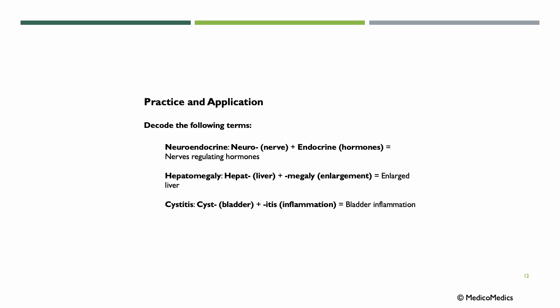Now, to some practice and application — decode the following terms. Neuroendocrine: 'neuro' meant nerve, 'endocrine' means hormones, so neuroendocrine means nerves regulating hormones. Hepatomegaly: 'hepat' came from liver, 'megaly' means enlargement, so an enlarged liver. Cystitis: 'cyst' was bladder, '-itis' was inflammation, so bladder inflammation.